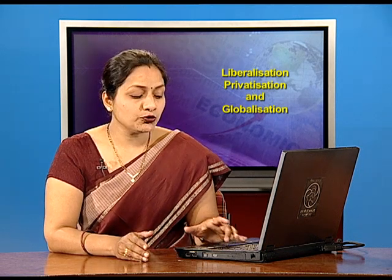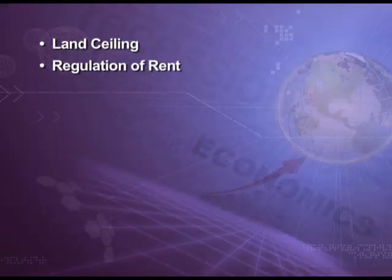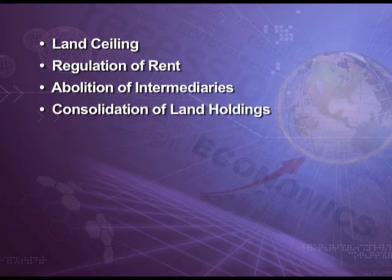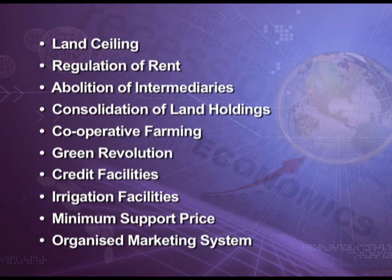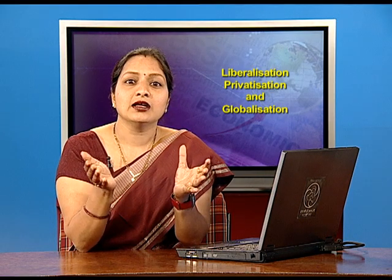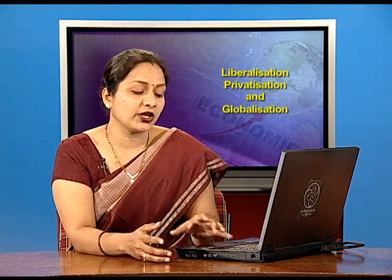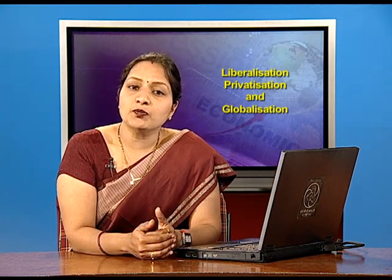Not only did the industrial sector improve, but also the agriculture sector improved due to several reforms like land ceiling, regulation of rent, abolition of intermediaries, consolidation of land holdings, cooperative farming, green revolution, credit facilities, irrigation facilities, minimum support price and organized marketing system. Output expanded which ensured food security. India became a self-sufficient country in food production. Foreign trade policy was also formulated to protect domestic industry and keep the balance of trade in manageable limits in the form of import substitution.